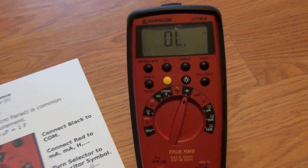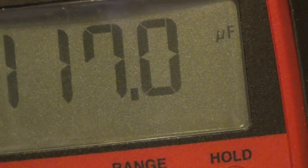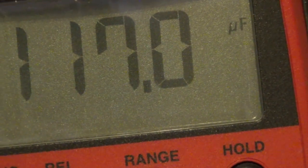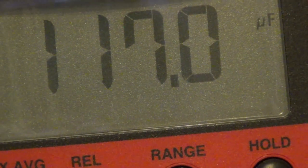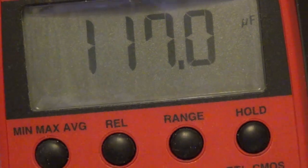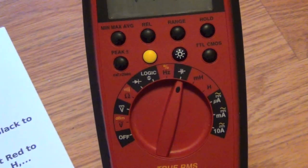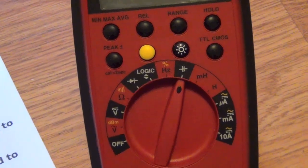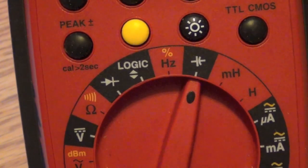Right there on the screen it says microfarads - the little micro symbol. It's an auto-ranging multimeter for the capacitance, and so there we have the selector set to capacitance and we have the inputs set to the capacitance and to the COM.